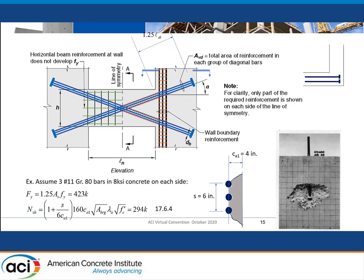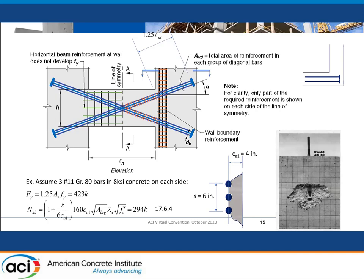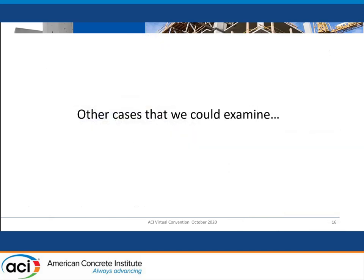You could put confining reinforcing around it or a lot of hoops, but at least you'd need to make the check to see where you're at. If it's a difference of about 120 kips or more, that's a lot of load to try to pick up with reinforcing that's supposed to amplify your breakout capacity.